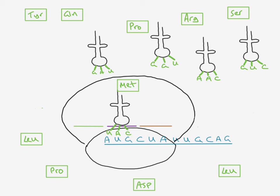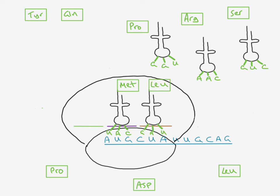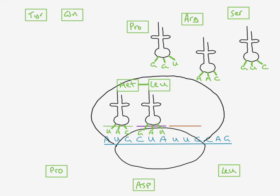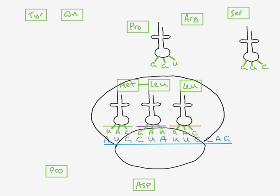A second transfer RNA molecule, whose anticodon corresponds to the next codon, collects its amino acid and brings it to the third attachment site. Again, we have complementary base pairing between the codon and the anticodon. A peptide bond is then formed between the two amino acids. Before a third amino acid is collected, the ribosome moves along the messenger RNA molecule, creating a spare attachment site.